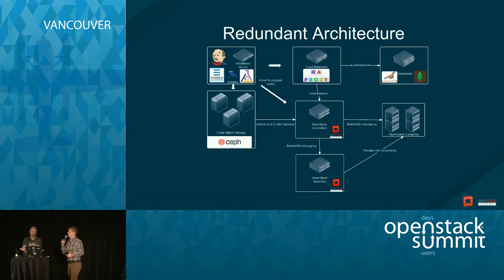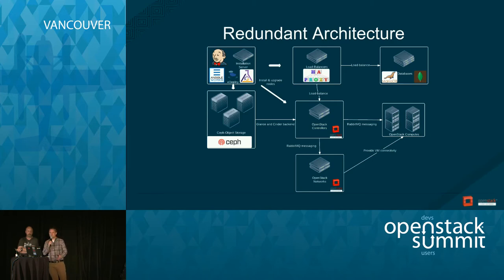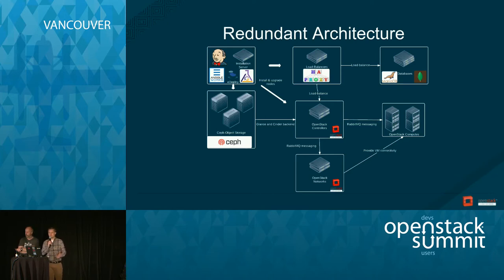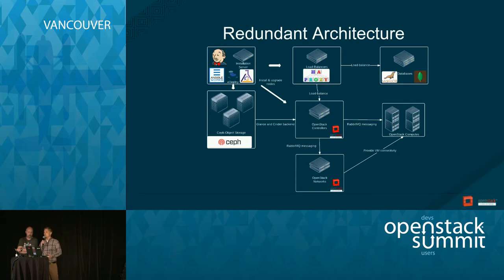Let's talk about architectures. Whatever architecture you are using, it needs to be redundant — you need HA, not only for infrastructure services but also for OpenStack resources. In this picture you can see we use some tools to provide HA, though the picture is not complete and some OpenStack resources also need HA.